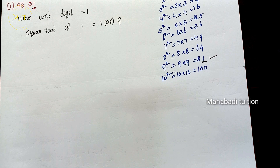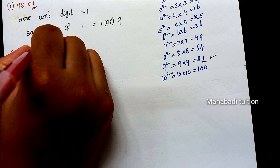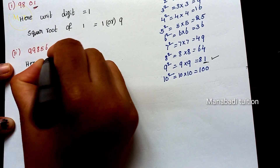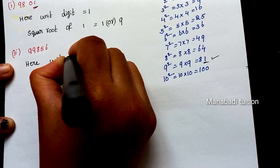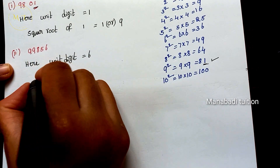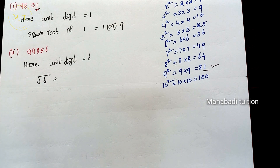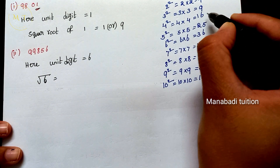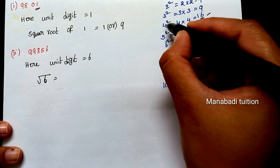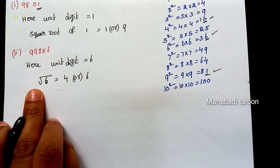The second number is 998564. Here the unit digit is 6. Since 4 squared ends in 6 and 6 squared also ends in 6, the unit digit of its square root could be either 4 or 6.